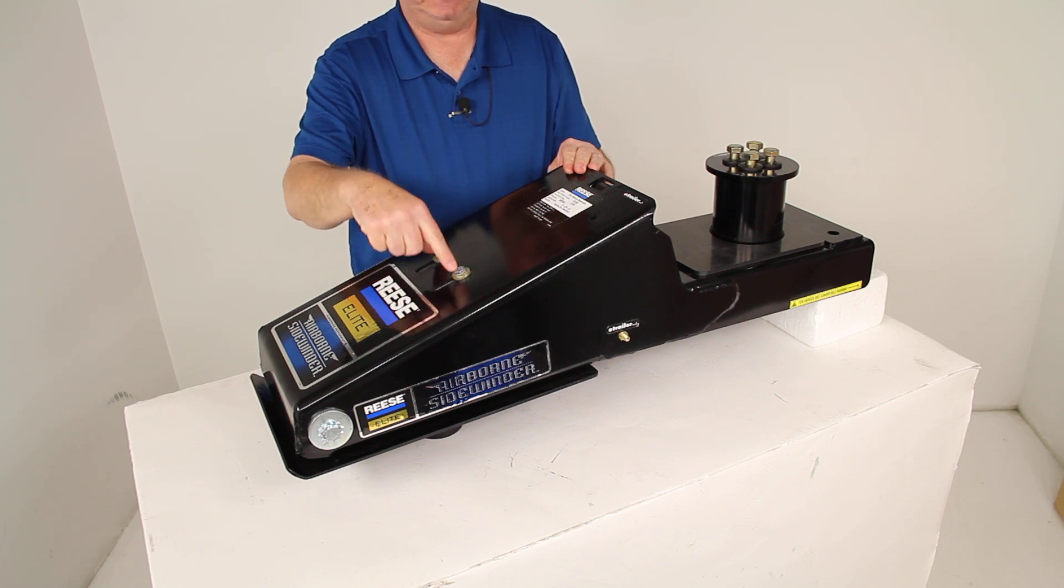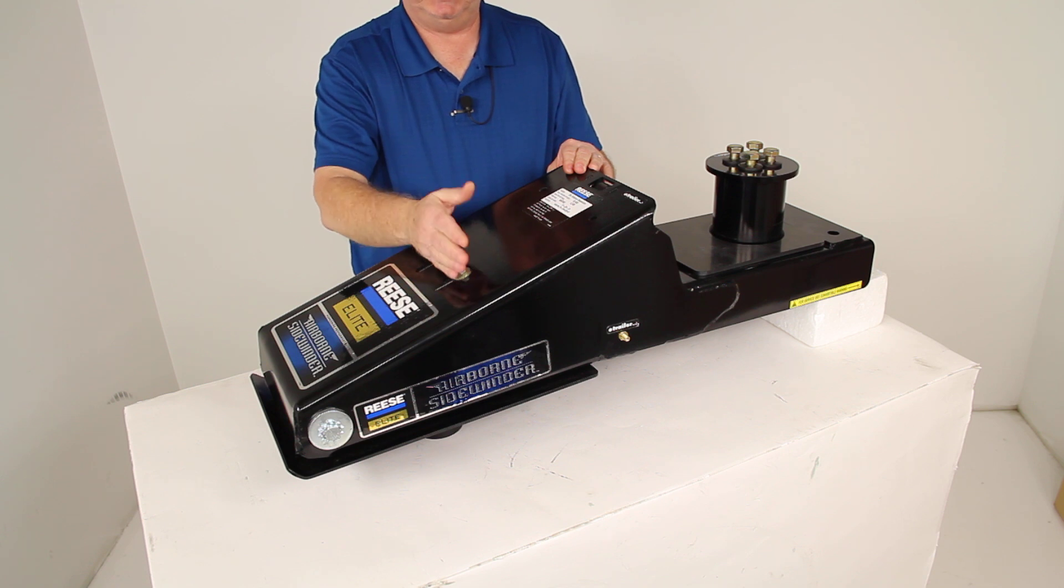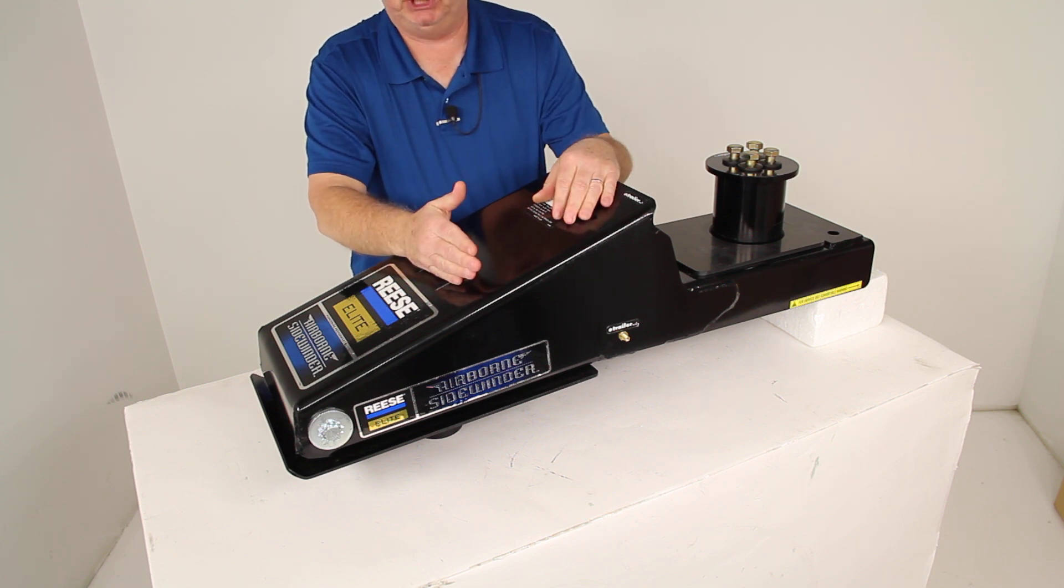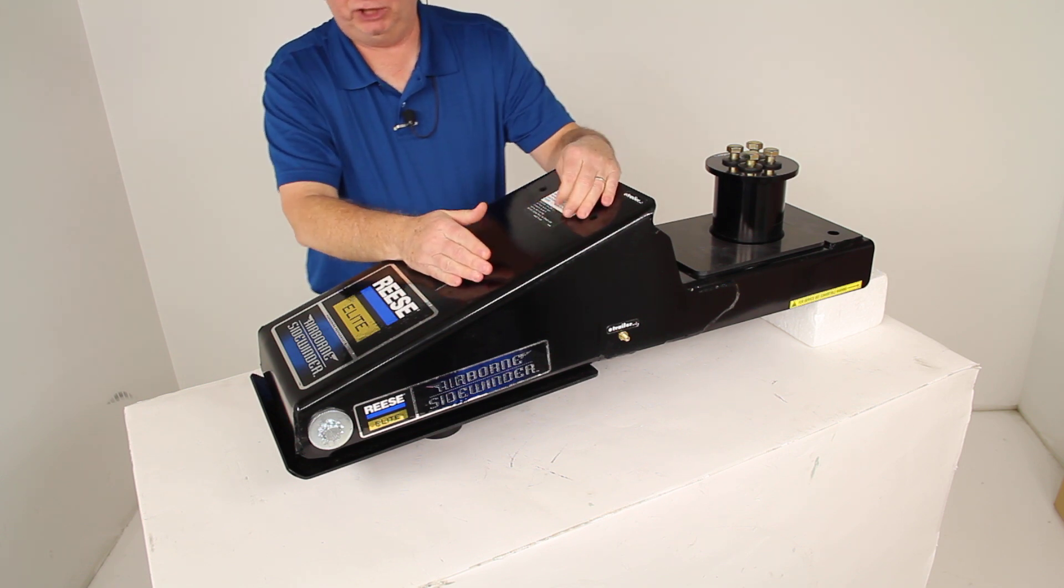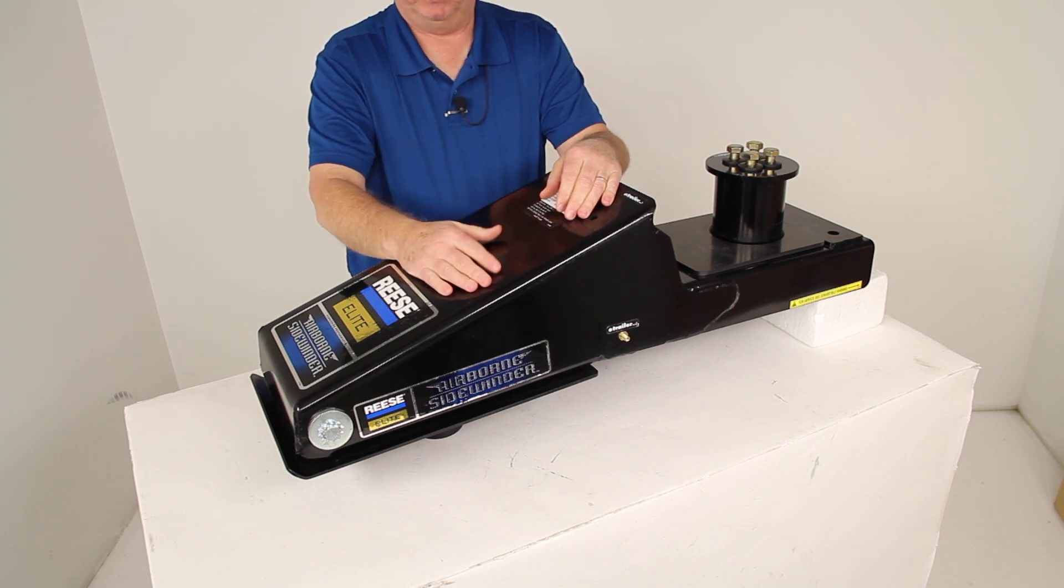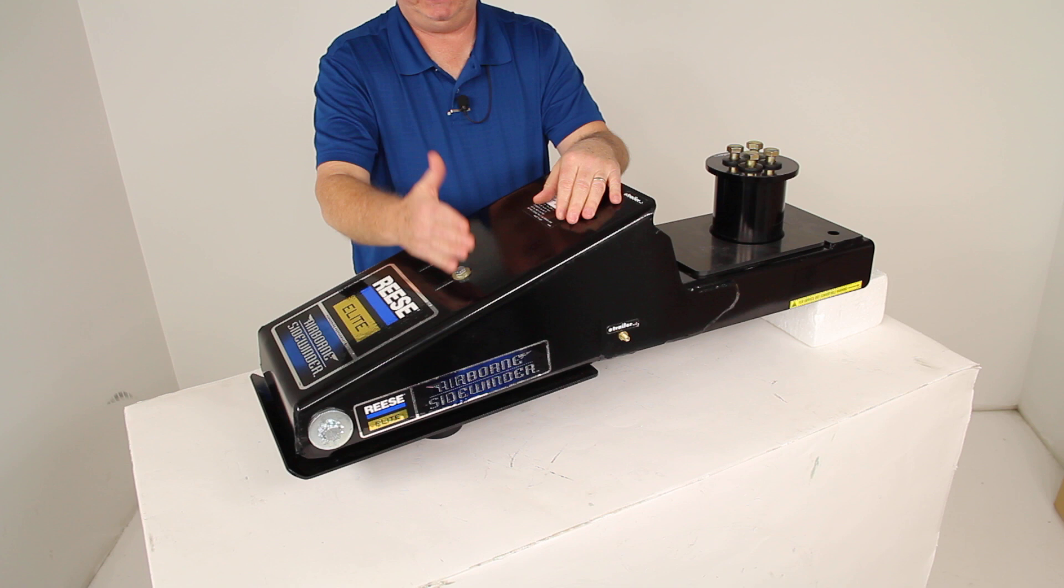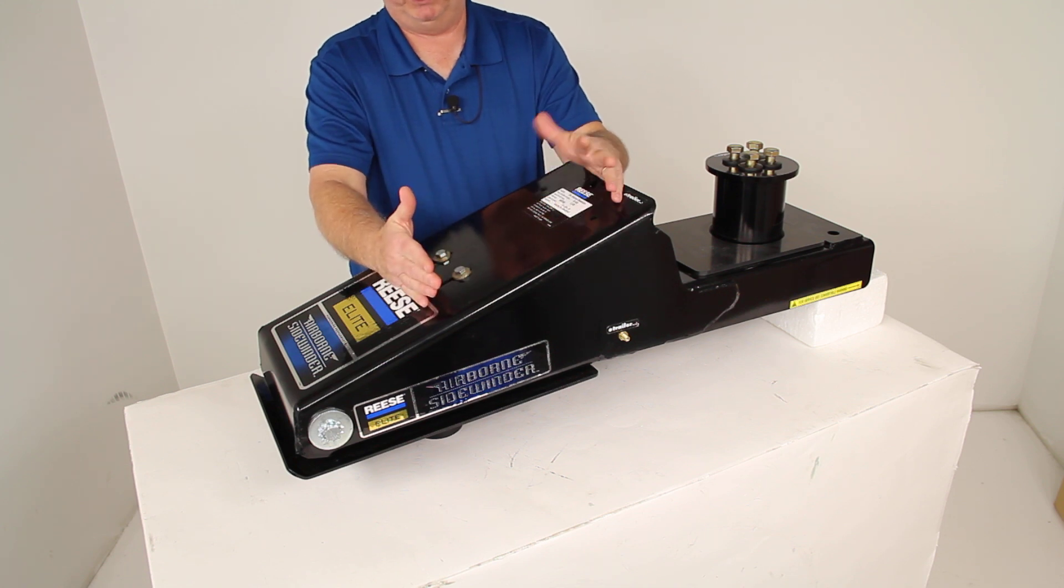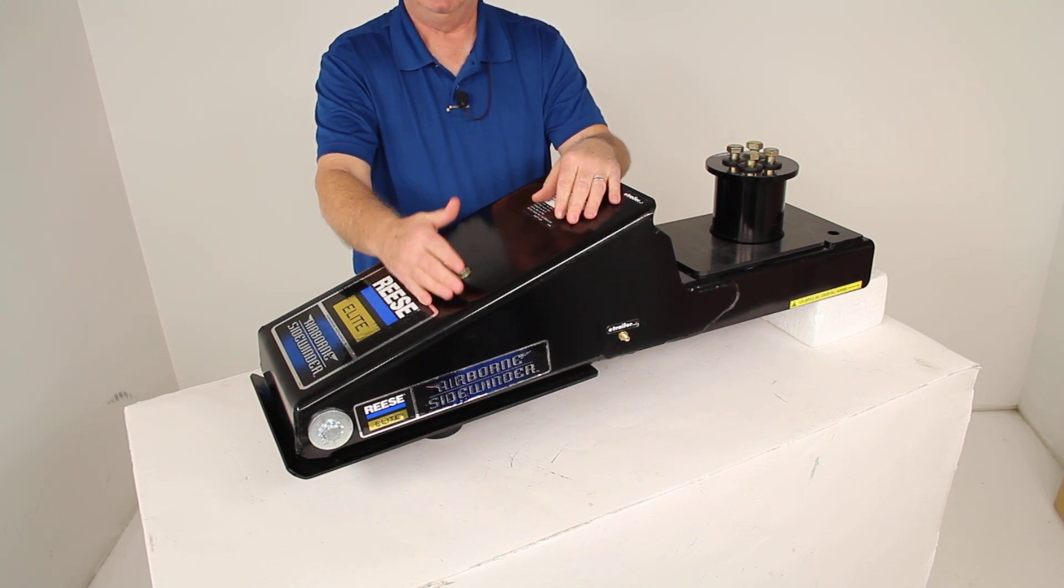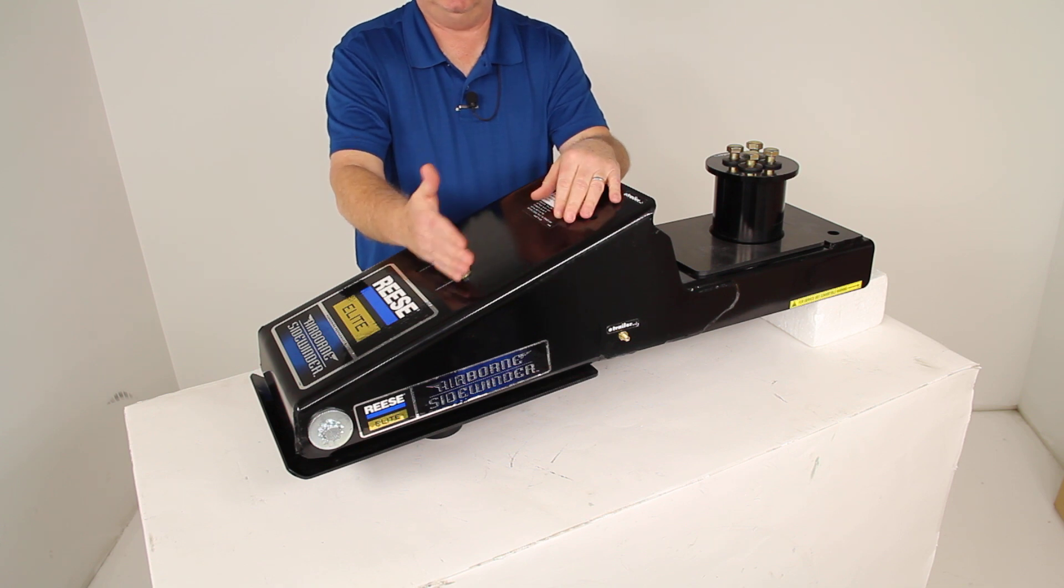The nice feature is that you see these two bolts right here. If you just loosen those you can actually reposition the airbag depending on your tongue weight, so it'll give you better support with varying loads. If you have a trailer that has a very light tongue weight you can loosen these, move it forward and it's going to give you a better ride. If your trailer has a heavy tongue weight loosen them, move them backwards and it'll change and support the load you're going to be carrying.